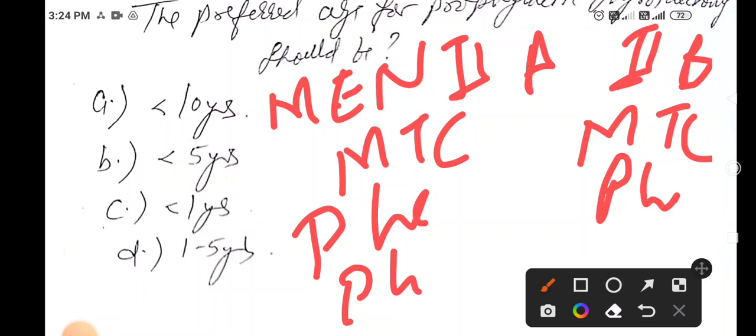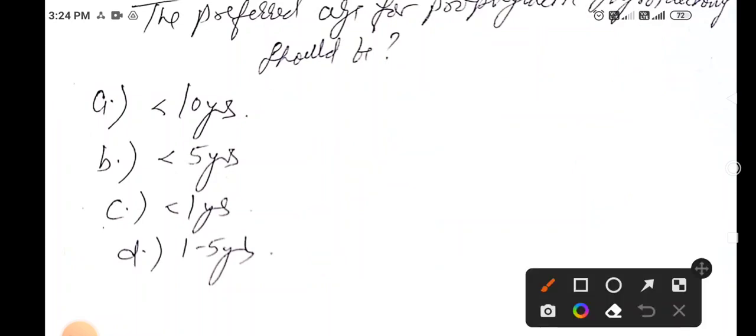In MEN 2B we also find mucosal neuromas and marfanoid habitus. If in a child we find MEN 2A positive, then we have to do RET mutation.